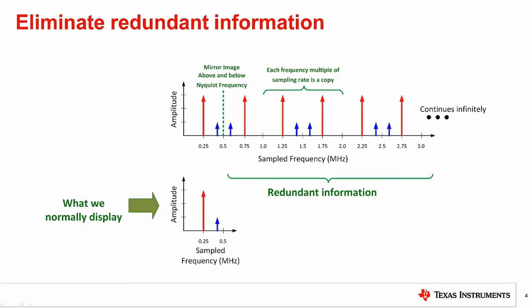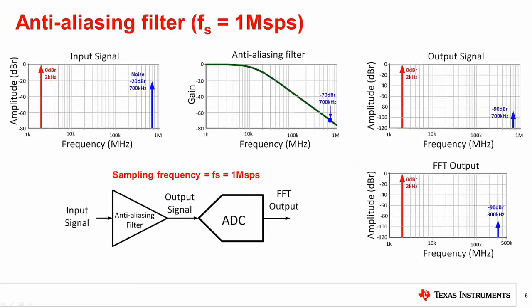Ideally, we want to avoid any aliasing into the Nyquist band. The main way to do this is to use an anti-aliasing filter. The best way to avoid aliases is to use an anti-aliasing filter. The objective of this filter is to assure that any input signal above the Nyquist rate is significantly attenuated so that it does not show up as an alias signal. In this example, the desired input signal is at 2 kilohertz, and a noise signal is at 700 kilohertz.